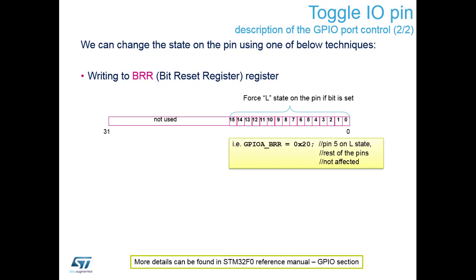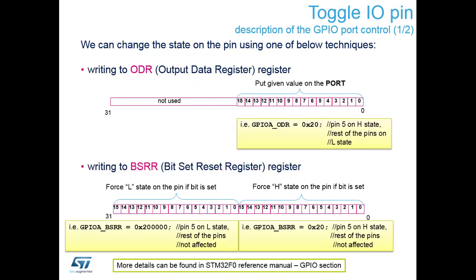We're going to use the Bit Set Reset Register in our hands-on to control our LED — loading 0x20 hexadecimal to set and 0x200000 hexadecimal to reset our green LED on the target board.